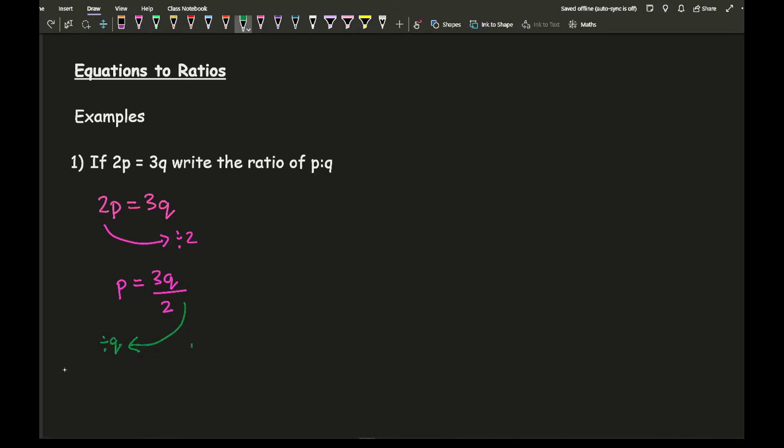I'm left with p over q equals 3 over 2. Once it's in this format, I can convert this into the ratio. So p to q is going to be equal to 3 to 2. There is my final answer. Or if you prefer, you can write it like that, which is absolutely fine.